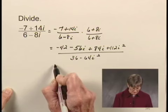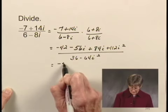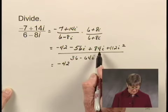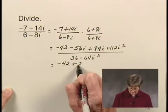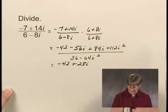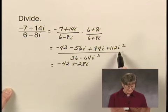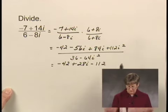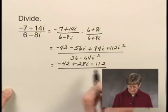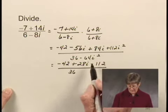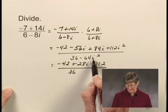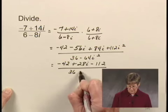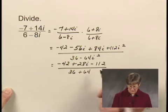Now let's see if we can simplify this. In the numerator, I'll have negative 42. Negative 56i plus 84i is going to be 28i, so plus 28i. And 112 times i squared is 112 times negative 1, so I would be subtracting 112 here. And in the denominator, I have 36, and i squared is negative 1, so I have minus 64 times negative 1 or plus 64 in the denominator.